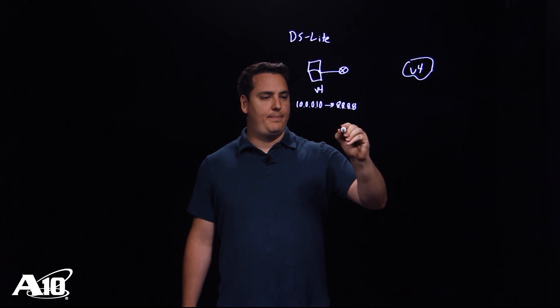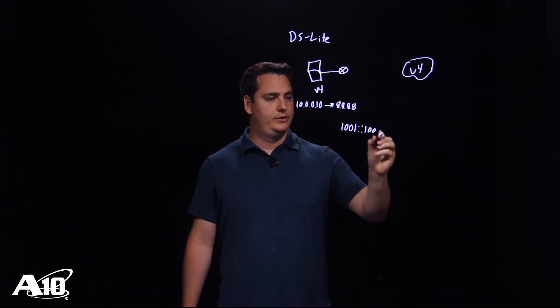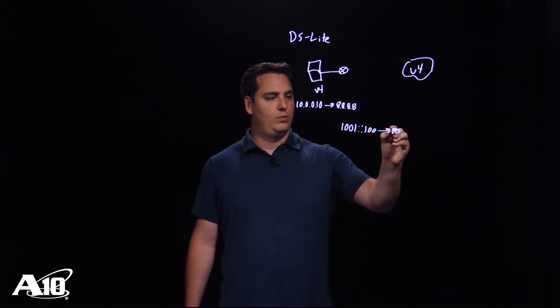So let's say for example, 1001 colon colon 100 is the source IP it will use and it will go to 2001, which will be on the A10, 200.